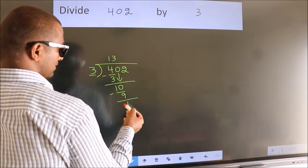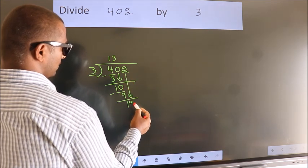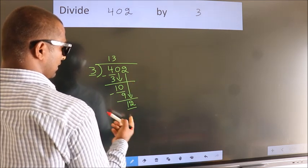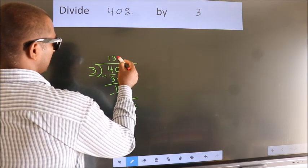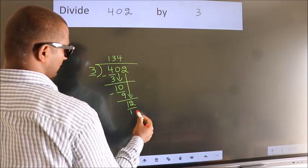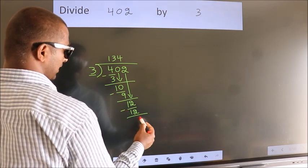After this, bring down the next number. 2 down, so 12. When do we get 12 in the 3 table? 3 times 4 is 12. Now we subtract. We get 0.